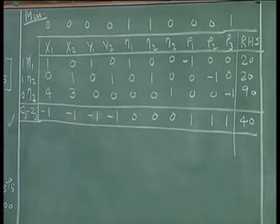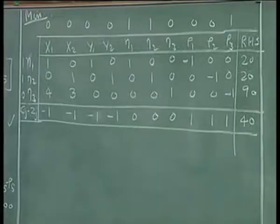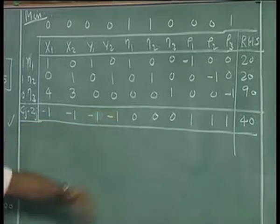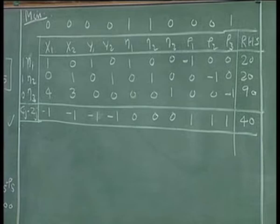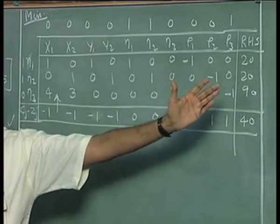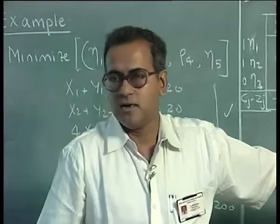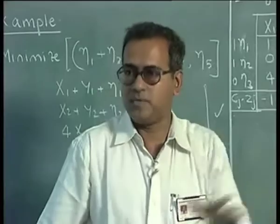It is a minimization problem. You have calculated Cj minus Zj. So for a minimization problem, a negative Cj minus Zj will enter. You could enter either this or this or this and so on and maybe you can start with this and then compute your thetas and proceed in your simplex iteration till you reach the optimum solution.